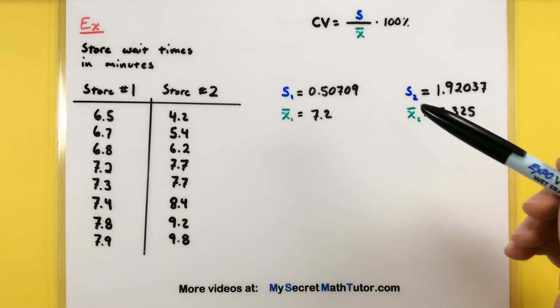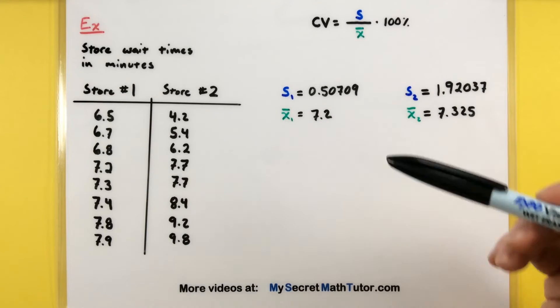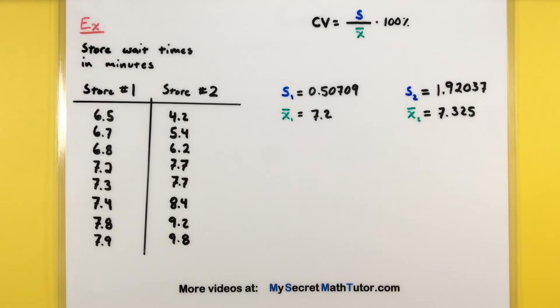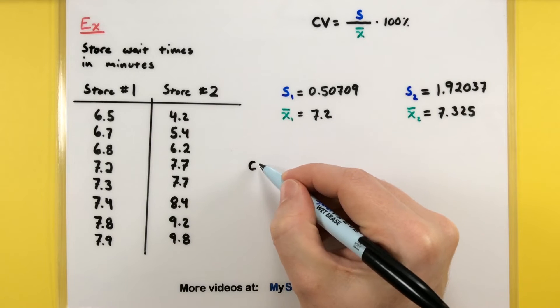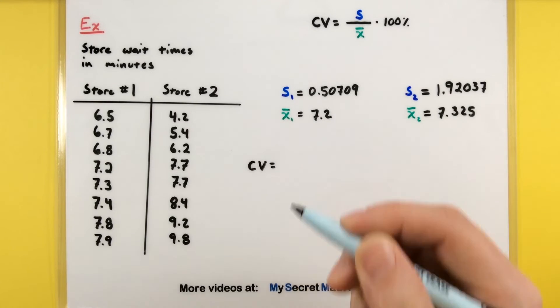Alright, now that we have the standard deviation and the mean for each of our stores, now it's a simple matter of dividing these and then multiplying by 100%. That 100 is really just a conversion so that we change it from a decimal into a percentage.